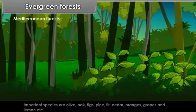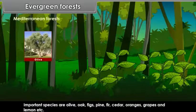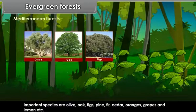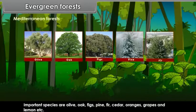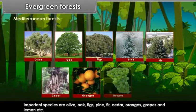Important species of Mediterranean forests are Olive, Oak, Figs, Pine, Fir, Cedar, Oranges, Grapes and Lemon.